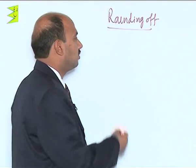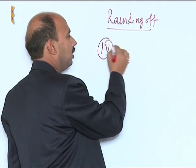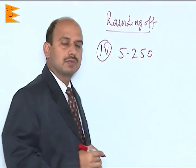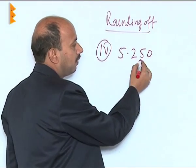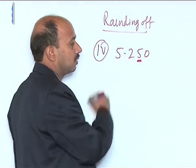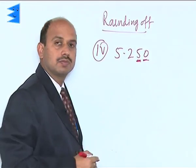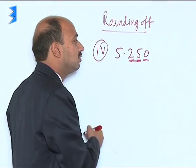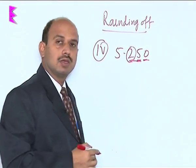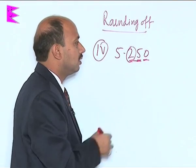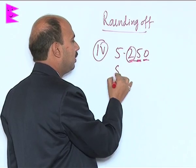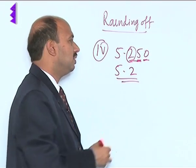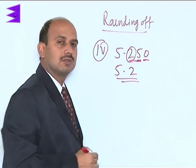Now see the fourth example. If you have the number 5.250, the trailing digit is 0, and the preceding digit is 2, which is even. In that case you leave the number as it is: 5.2. The preceding digit is left unchanged.